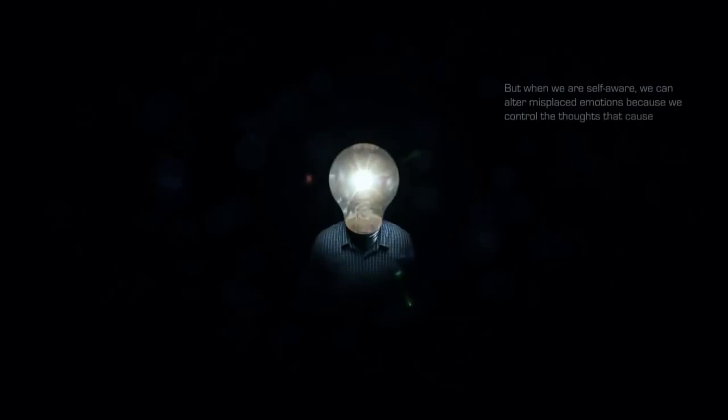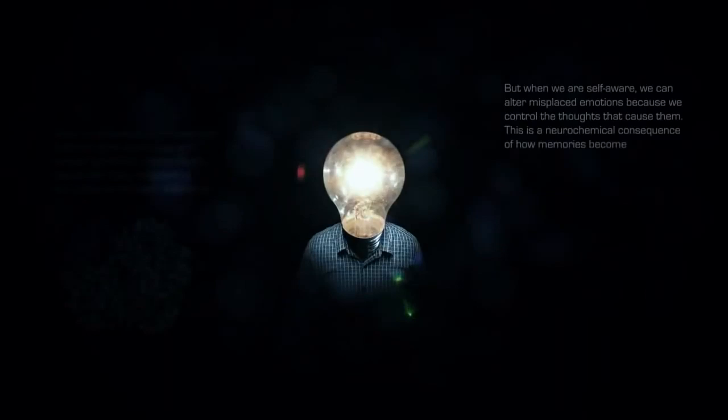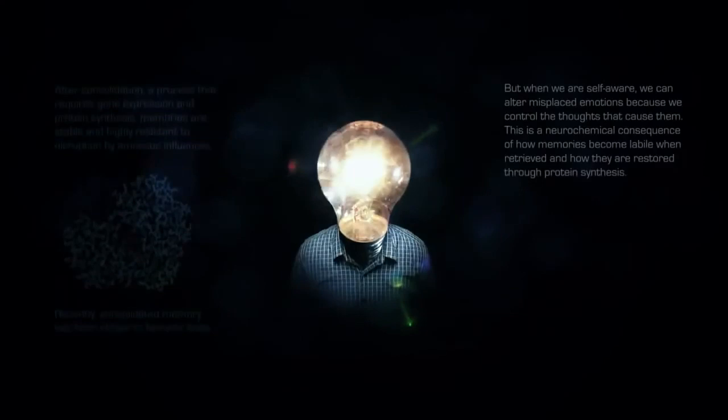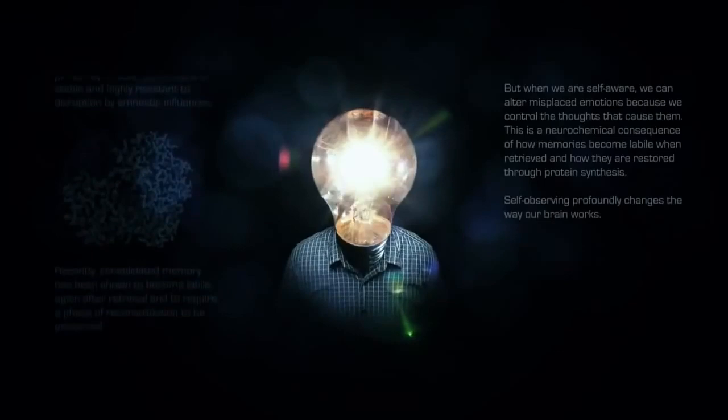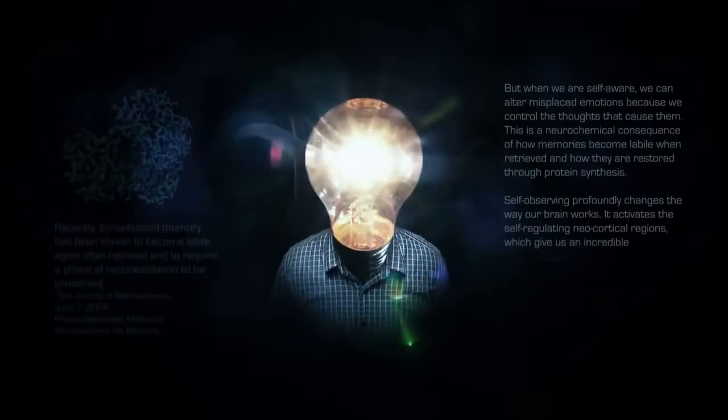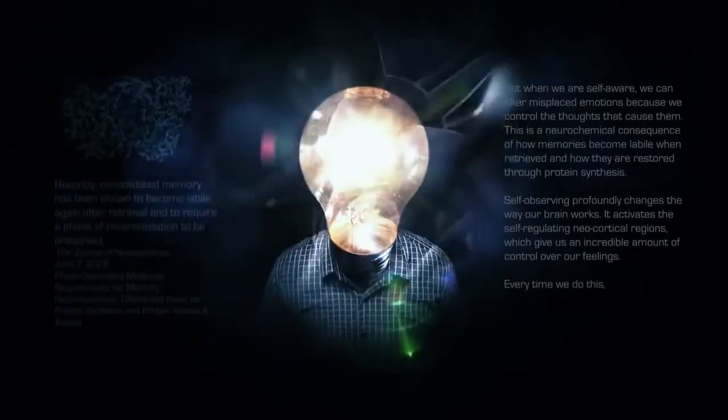But when we are self-aware, we can alter misplaced emotions because we control the thoughts that cause them. This is a neurochemical consequence of how memories become labeled when retrieved, and how they are restored through protein synthesis. Self-observing profoundly changes the way our brain works. It activates the self-regulating neocortical regions which give us an incredible amount of control over our feelings. Every time we do this, our rationality and emotional resilience are strengthened.